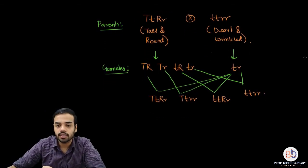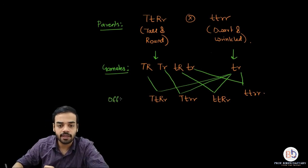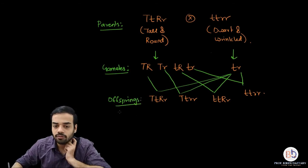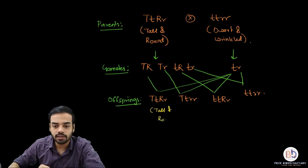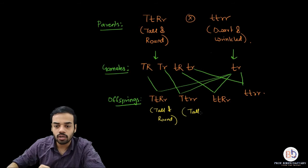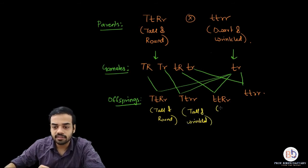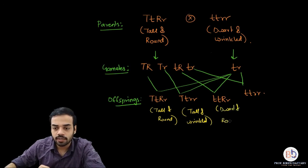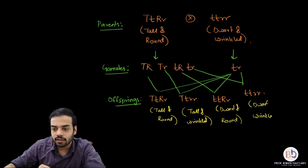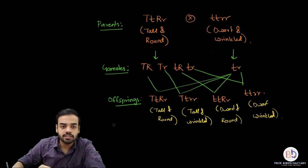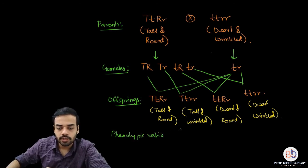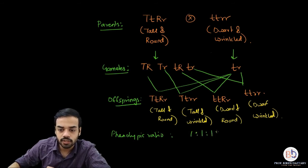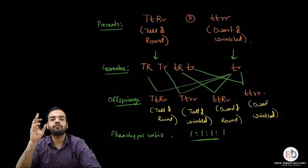All these offspring now — we have to find their genotypic and phenotypic ratio. For the phenotypic ratio, let us write down the phenotypes first. The first is a tall and round plant, the second is a tall and wrinkled plant, the third is a dwarf and round plant, and the last one is a dwarf and wrinkled plant. So you are getting four different phenotypes. The phenotypic ratio is going to be 1:1:1:1, because you have four different types of phenotypes.